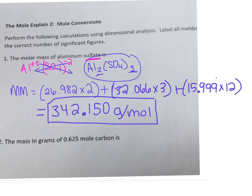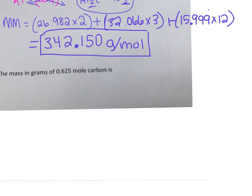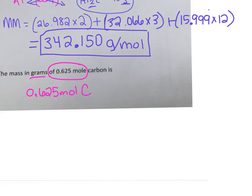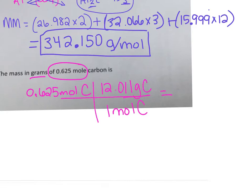Number two on the warm-up asked for the mass in grams of 0.625 moles of carbon — a straightforward conversion from mole town to gram land. Start with 0.625 moles, set up your railroad tracks, one mole of carbon equals 12.011 grams. Multiply across — with three significant figures your answer is 7.51 grams of carbon.